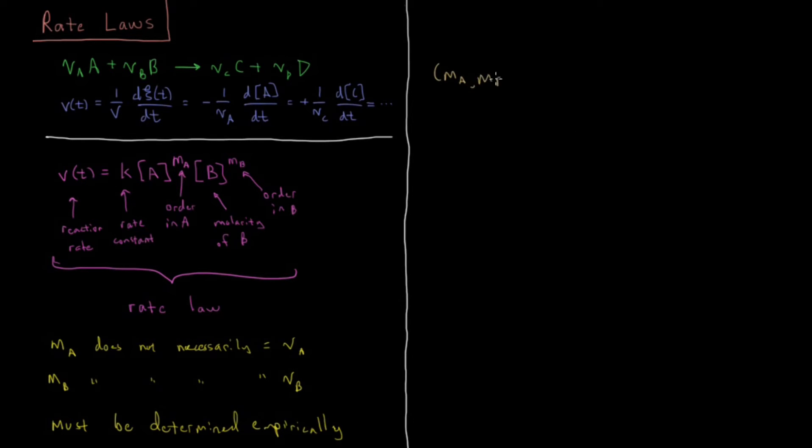Some other things about this. mA and mB, they are usually integers. So they usually have values like 0, 1, 2, etc. And in fact they are usually either 0, 1, or 2. And they are always greater than or equal to 0, they can be 0 definitely. You could have a reaction rate which doesn't depend on the concentration of B or doesn't depend on the concentration of A.